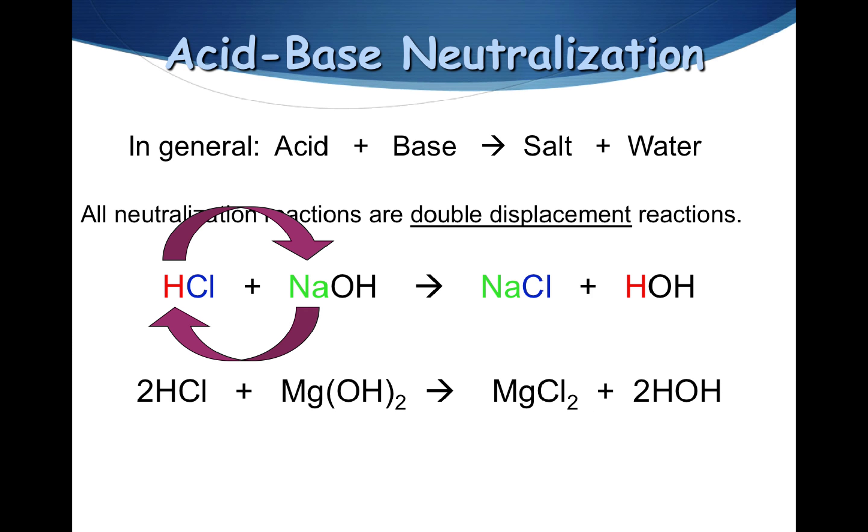In the next example, you have HCl reacting with magnesium hydroxide. Again, the hydrogen and the magnesium are going to change places and you're going to wind up with the salt, magnesium chloride and two water molecules.